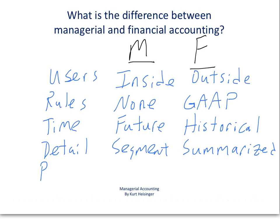How do we evaluate performance for Managerial Accountants versus Financial Accountants? With Managerial Accountants, we look at both financial and non-financial information. Financial information might be taking a look at return on investment for a particular division within the company. Non-financial information to evaluate performance might be something like looking at on-time deliveries for companies like UPS or FedEx.